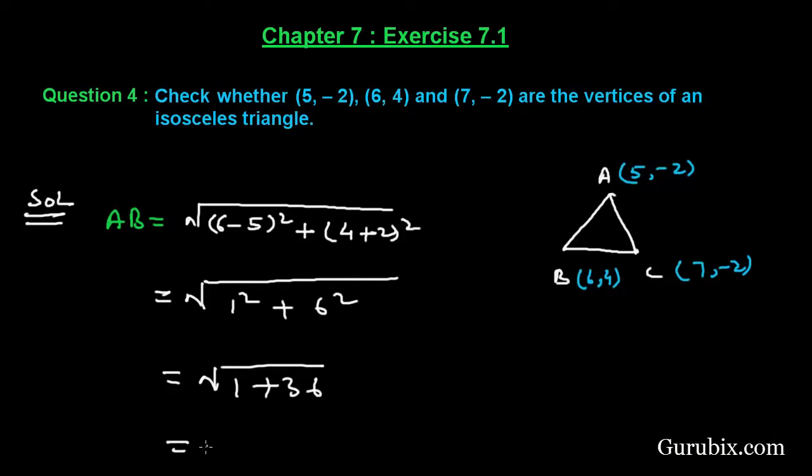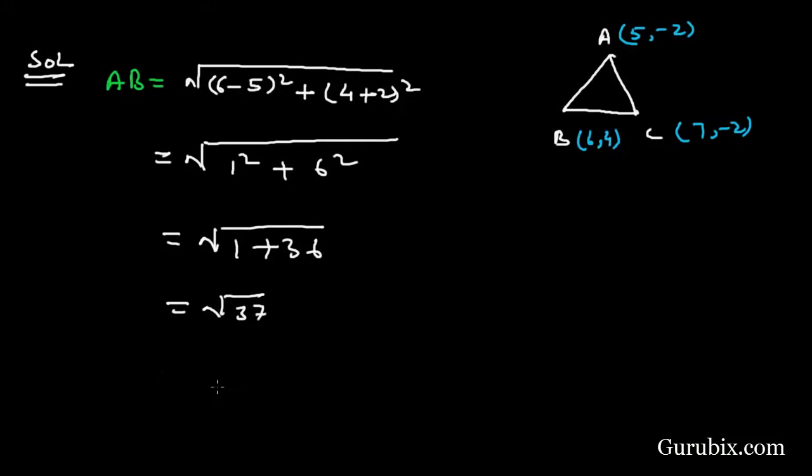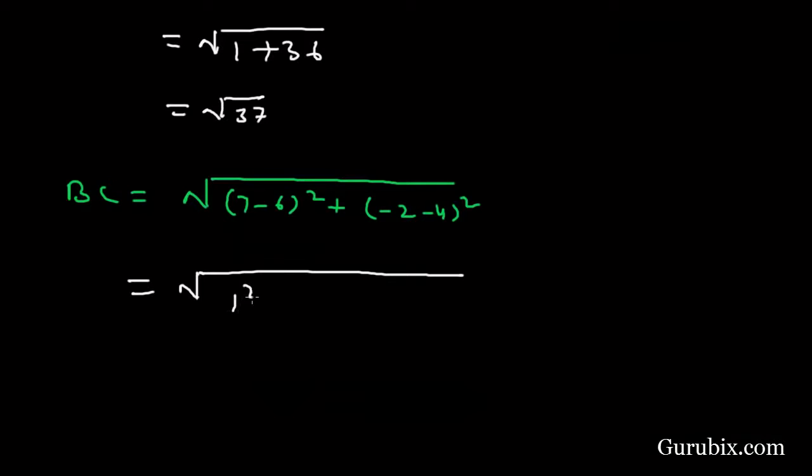Now we shall find the distance between B and C. In that we shall find the square root of (7 - 6)² plus (-2 - 4)². This equals 1² plus (-6)², which equals 1 plus 36, and this equals square root of 37.